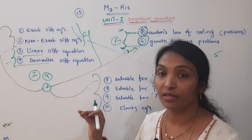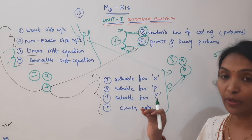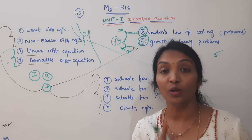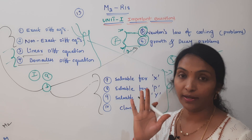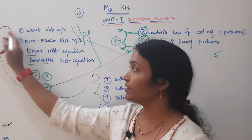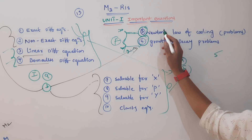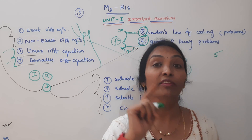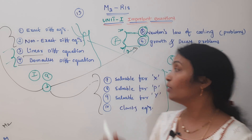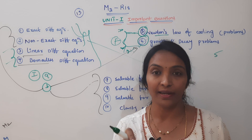In the playlist description, check your related and previous questions — please skip and solve this video. First, the exact thing is non-exact, linear, Bernoulli. Newton's Law of Cooling — if it is clear, check Growth and Decay. If it is a problem, the problem process is correct.